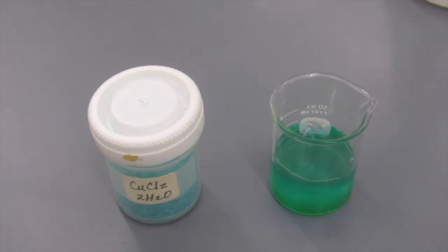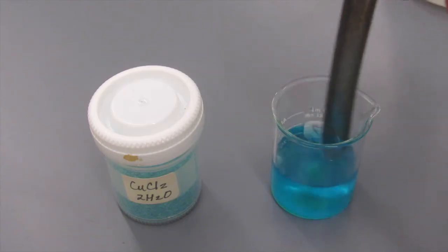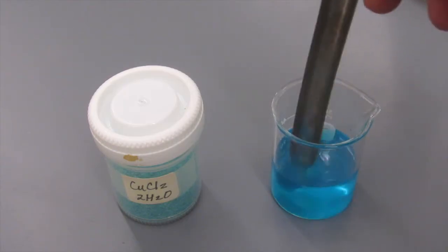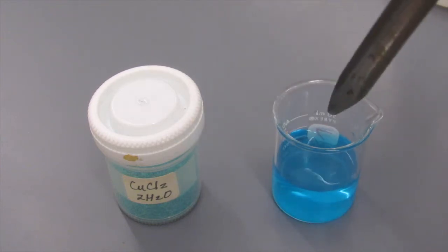It starts off being a greenish color, but as you start to stir it, it'll quickly turn more of a lighter blue or turquoise color. At this point, we're ready to add the aluminum.